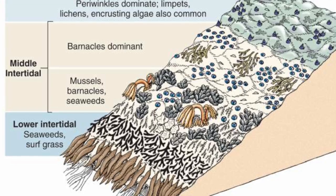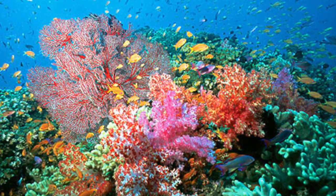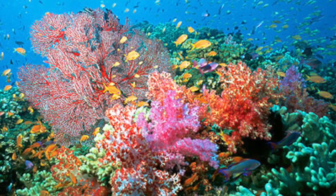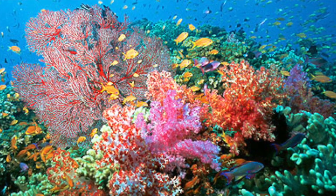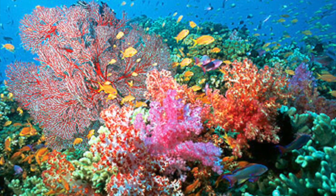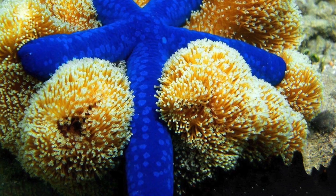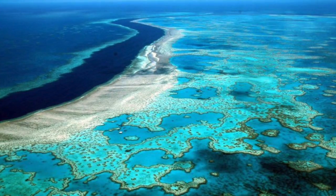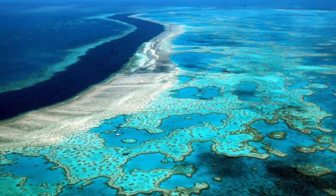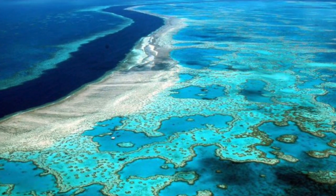Coral reefs are our next zone. These are very popular parts of the ocean because they are bright in color and feature a lot of different life. These are found past shorelines and are the most diverse of all marine biomes. Corals live in water that is poor in nutrients and food. Coral is also a tiny animal that secretes a layer of limestone to form its skeleton. Each coral is very small and mostly found in vast colonies.